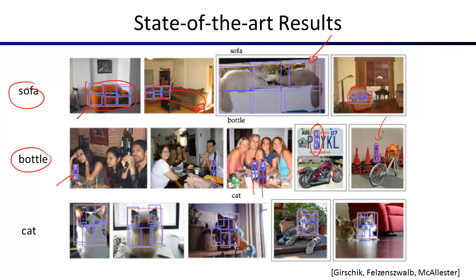This is an unsolved problem — you can go think about this. A lot of graduate students in computer vision work specifically on how to improve computers' ability to understand what's in an image, and a lot of them use machine learning to make it work.